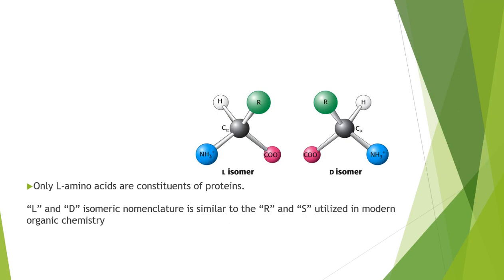Most proteins have constituents of the L isomer. That means whatever amino acids are contained in proteins, they are all present in the L — that is, levorotatory — form. Nowadays, instead of L (levo) and D (dextro), in chemistry, especially organic chemistry, we call them R and S.